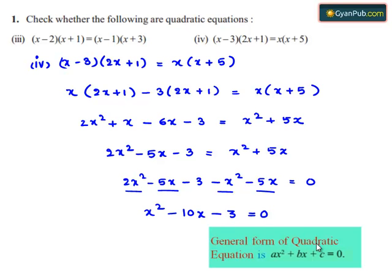The general form of the quadratic equation is ax square plus bx plus c equals 0. The final equation obtained is x square minus 10x minus 3 equals 0. So if we notice, this equation is similar to the general equation. So we can say that the given equation is a quadratic equation.